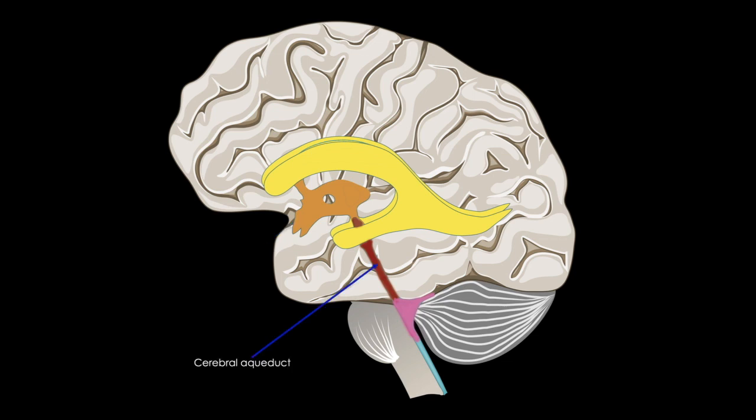The cerebral aqueduct, seen in red, is a narrow channel through the midbrain that connects the third and fourth ventricles, and the fourth ventricle, shown in pink, is an enlarged cavity at the level of the pons and the medulla, and it's overlaid by the cerebellum. This last image shows all of the ventricles labeled, plus the central canal of the spinal cord.